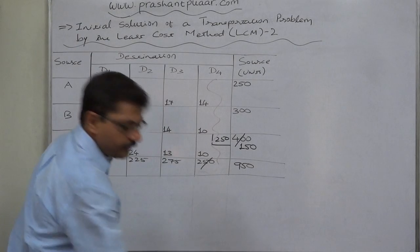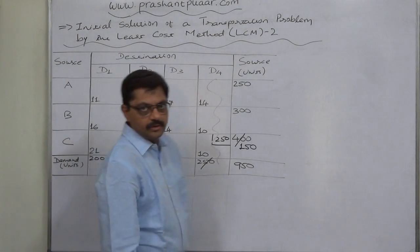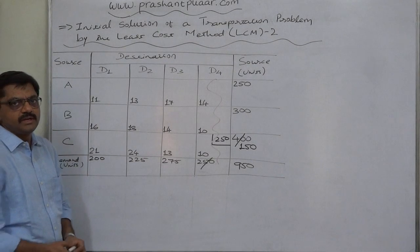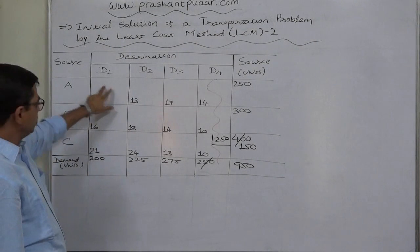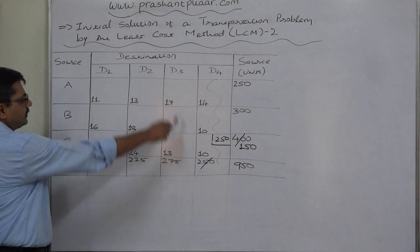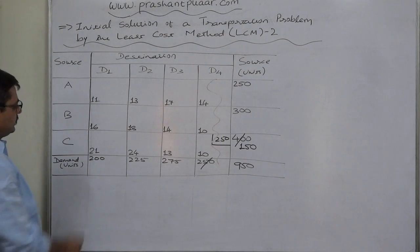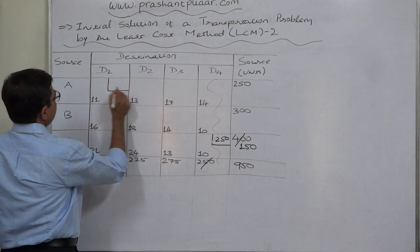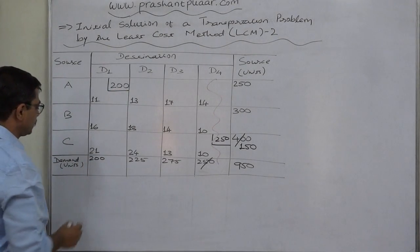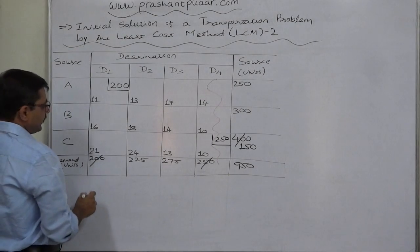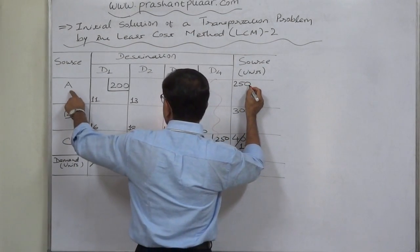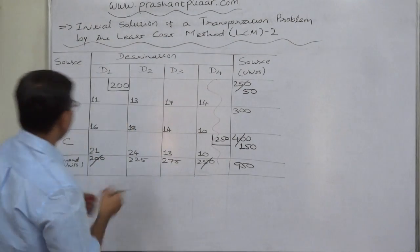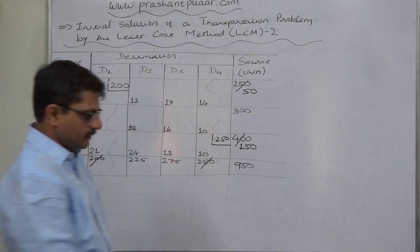From the remaining table, the cell with the lowest cost is A-D1, with a least cost of 11. Allocation: demand 200, supply 250 — whichever is lower, so we allocate 200 units. The demand of D1 is fully satisfied. Out of 250 units available from source A, 200 are allocated, leaving a balance of 50. We cancel column D1.